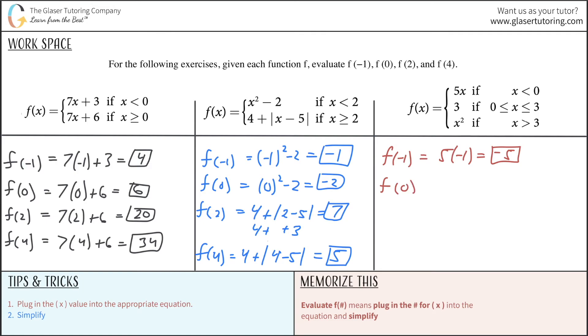The second question is going to be f of 0. So where does 0 lie? Well, 0 lies under this constraint now, because this interval is basically saying that x can take on any value from 0, including 0, all the way to 3, including 3. So I use now this equation. And you'll say to yourself, wait a minute, there is no x value. Say to yourself, that's actually great. I don't have to do any math. It's just 3.